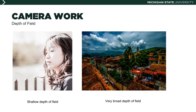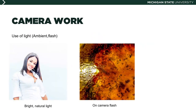Depth of field: on the left you see an image that has a shallow depth of field, and to the right an image that has a very broad depth of field where almost everything is in the sharpest possible focus. Here you see two different approaches to light. The one on the left uses only natural light — a very bright ambient light — and the one on the right uses an on-camera flash to supplement the existing lighting, incorporated into the design of the image.